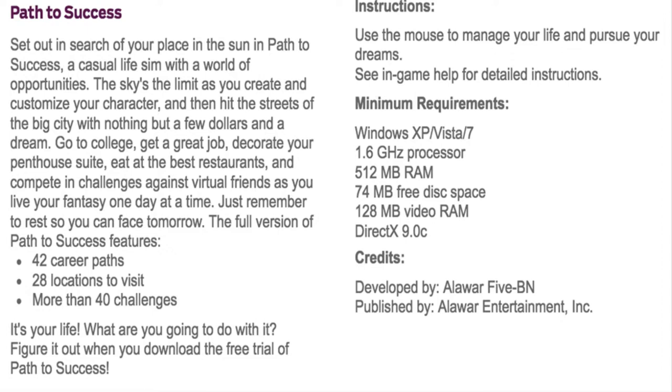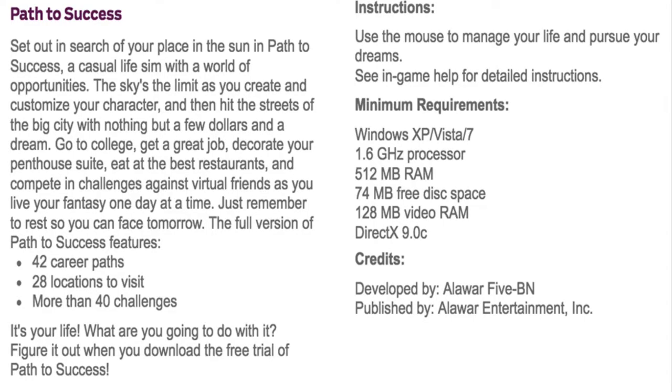The full version of Paths to Success features 42 career paths — 42 different ways to win — 28 locations to visit, and more than 40 challenges. It ends with: 'It's your life, what are you going to do with it?' There are a lot of options and a lot of flexibility in how players can be successful. Try to incorporate that flexibility also in your class.